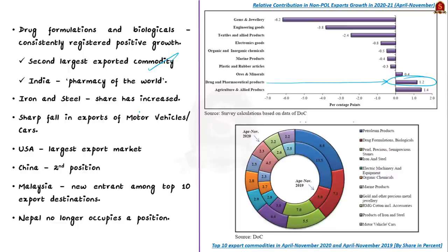This shows that India has the potential to be the pharmacy of the world. Iron and steel is another commodity whose share has increased. However, due to pandemic-related disruptions, there was a sharp fall in exports of motor vehicles, and till November 2020, motor vehicles were removed from the list of top 10 exported commodities.